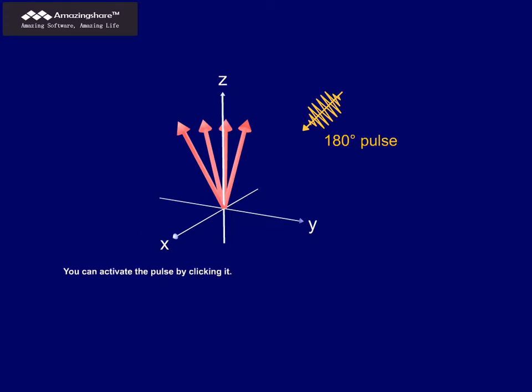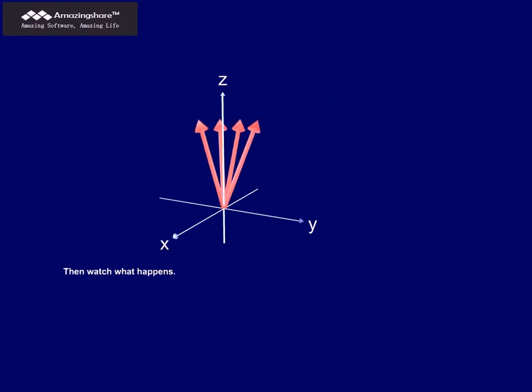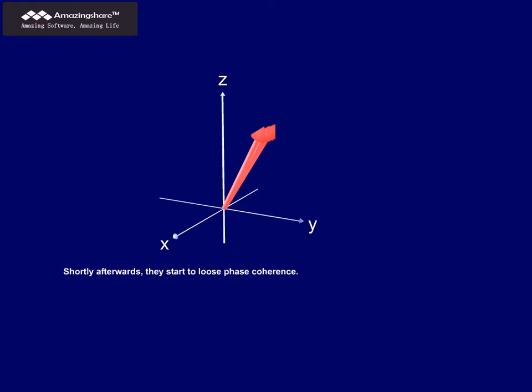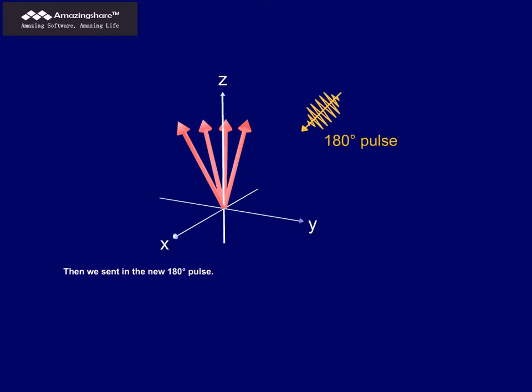You can activate the pulse by clicking on it. Then, watch what happens. What happened? Let us rewind and watch the scene again in super slow motion. This is the situation when the protons are in phase right after the 90-degree pulse. Shortly afterwards, they start to lose phase coherence. Then, we sent in the new 180-degree pulse.